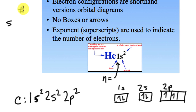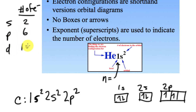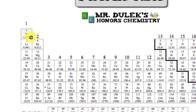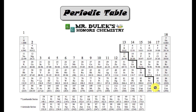S always has 2 electrons. P always has 6 electrons. D always has 10 electrons. F always has 14. You can use your periodic table to figure that out. These columns are your S's, these are your P's, these are your D's, and these are your F's. So if you ever forget, just count the columns: 2 for S, 6 for P, 10 for D, 14 for F. All the answers are embedded in the periodic table.